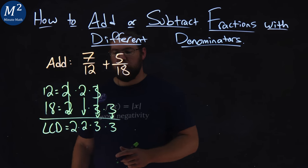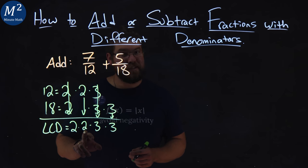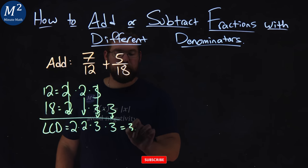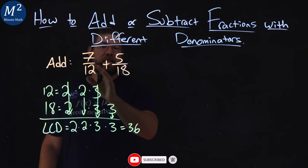So, what does that come out to be? 3 times 3 is 9, times 2 is 18, times 2 is 36. So, 36 is the least common denominator for these two fractions.